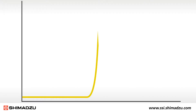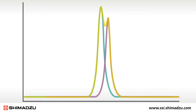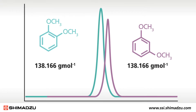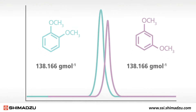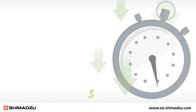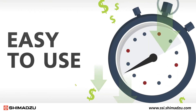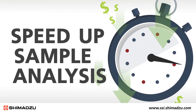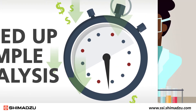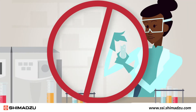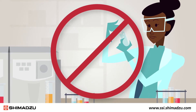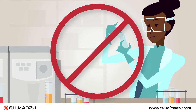IPDA can even resolve regioisomers that have the same mass, which would be indistinguishable using standard mass spectrometry. The software is easy to use and helps to reduce costs and speed up sample analysis by eliminating the need for expensive mass spectrometry equipment and time-consuming method redevelopment.